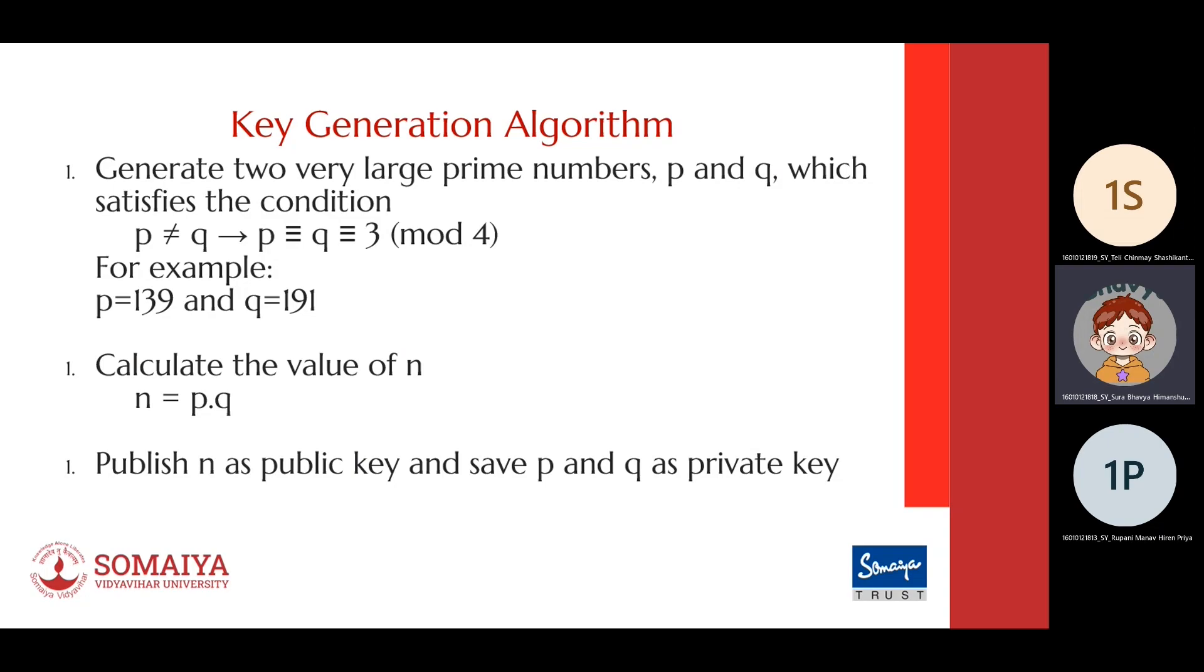Next, we calculate our public key n by multiplying the two large prime numbers to get an even larger number, and we save p and q as our private key.